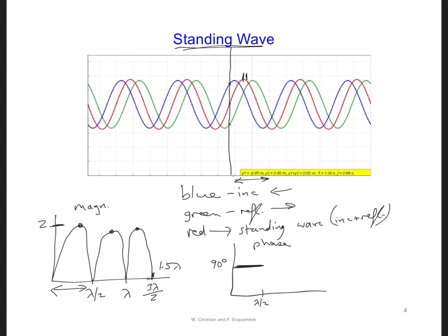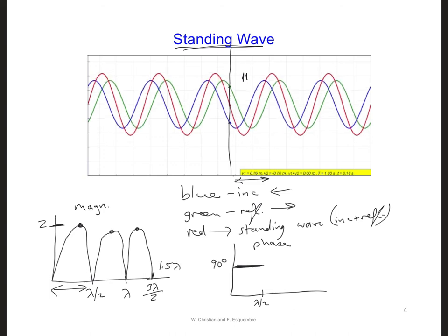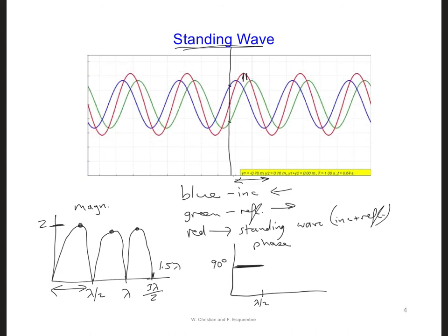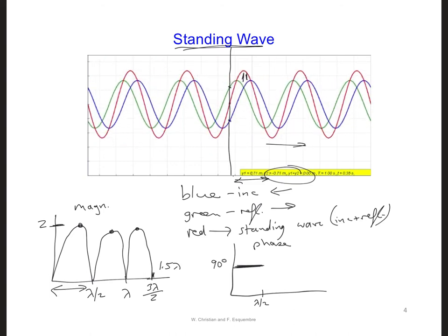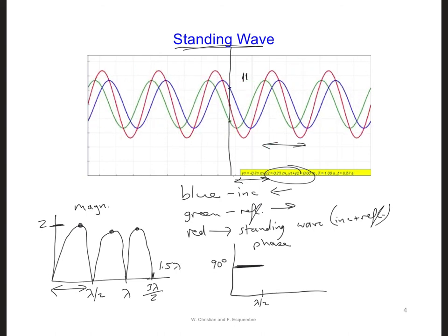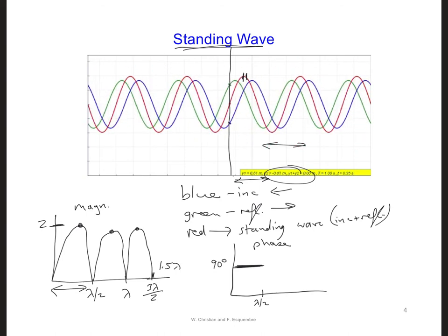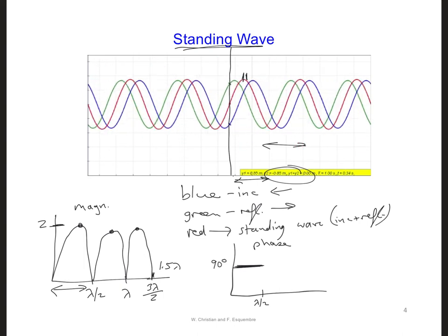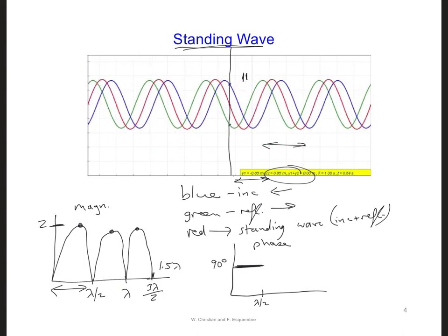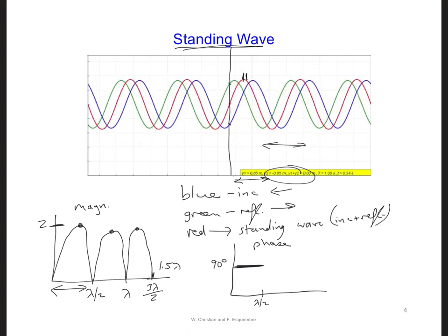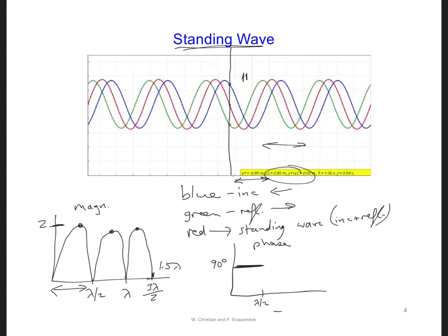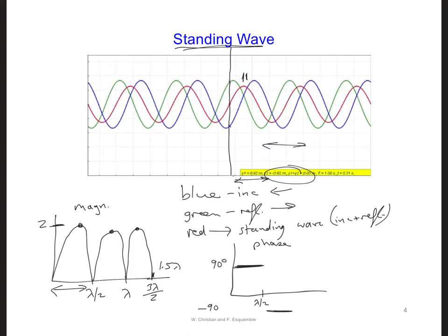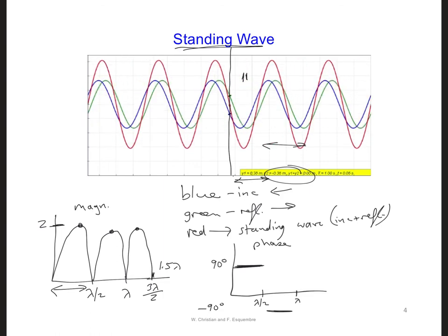And then starting at a half wavelength away from the PEC, the magnitude here, over this distance, has the same behavior as in the first half wavelength from the PEC, but this part of the wave is moving 180 degrees out of phase with the first part. So we're going to be down at minus 90 degrees here, up until one wavelength.